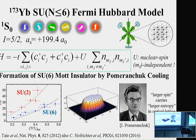In our previous experiment, we successfully demonstrated the formation of an SU6 Mott insulator state by the Pomeranchuk cooling effect. In this Pomeranchuk cooling effect, larger spins carry larger entropy in the optical lattice, which results in cooling of the system. This was successfully observed: starting from the same initial temperature, lower temperature is achieved in the SU6 system than in SU2.